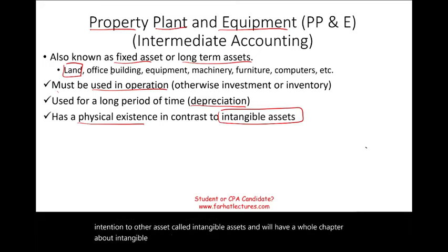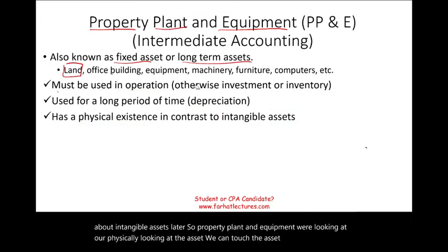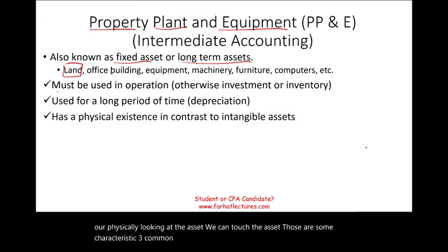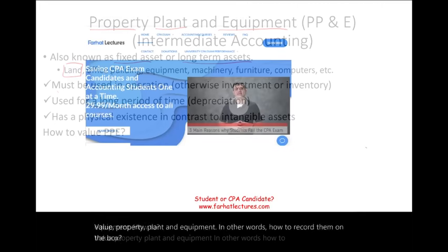So property, plant, and equipment — we are physically looking at and can touch the asset. Those are the three common characteristics of all property, plant, and equipment. Now, how do we value property, plant, and equipment? In other words, how do we record them on the books?